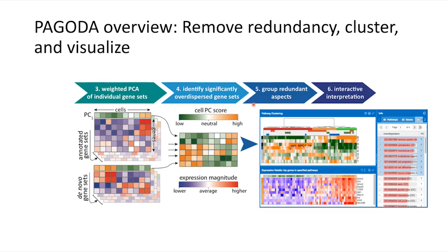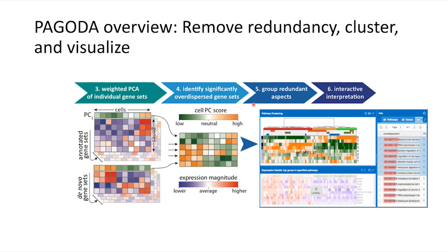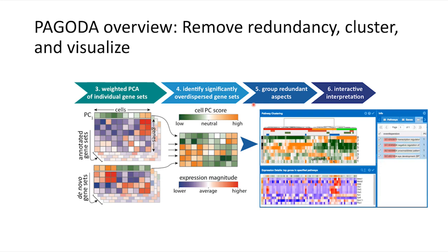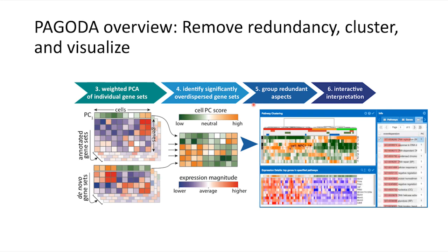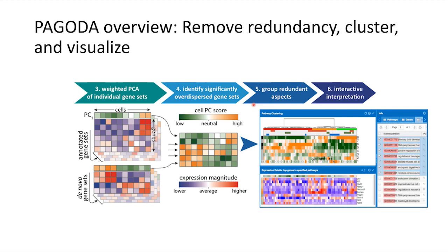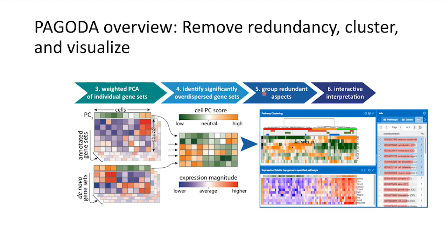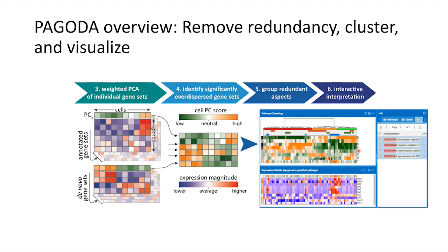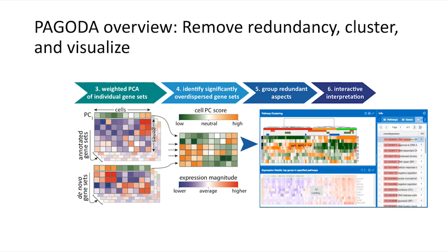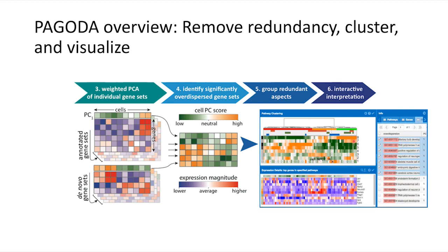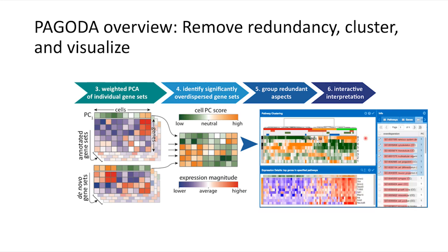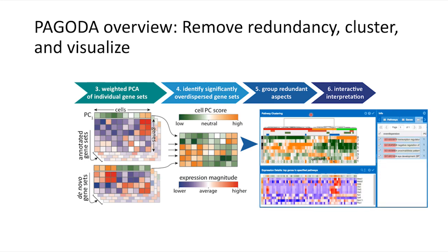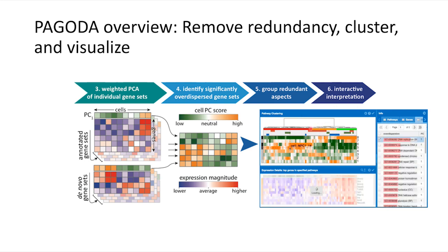Still, many pathways and gene sets share genes or show similar patterns of variability across cells. Therefore, we need to further collapse these redundancies into pathway clusters. Ultimately, we can provide to the investigator a hierarchical clustering of cells based on these pathway clusters, and also present an interactive browser to enable exploration of these results.